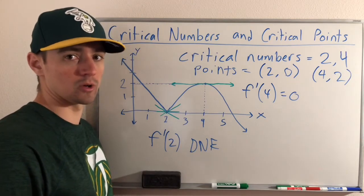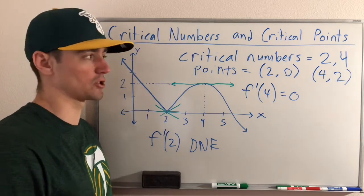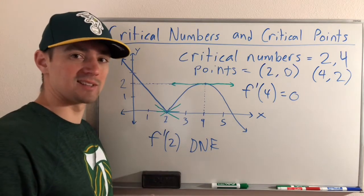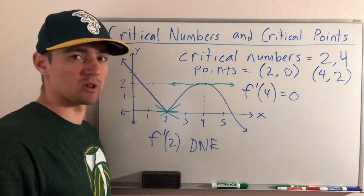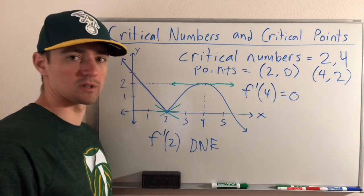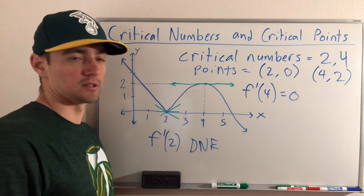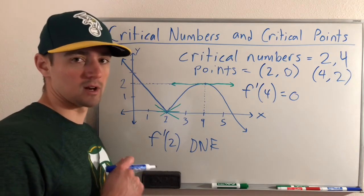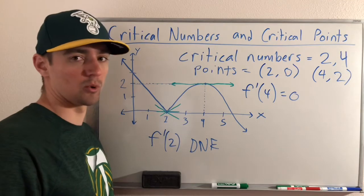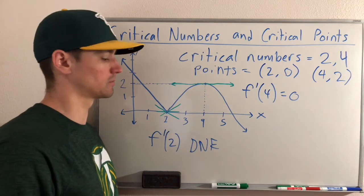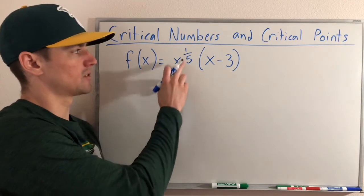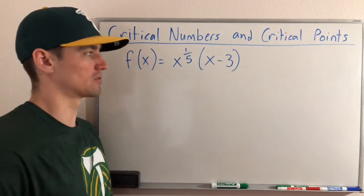Now I want to show you how to do it algebraically with a function. If this is making sense so far, please drop a comment below saying 'got it so far.' Let's go ahead and get into an example: given f(x) equals x to the 1/5 power times (x minus 3), we're going to find the critical numbers and critical points of this function.